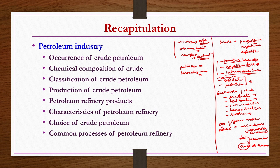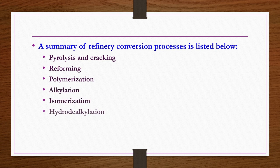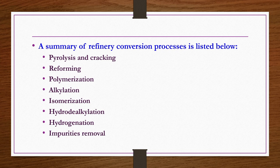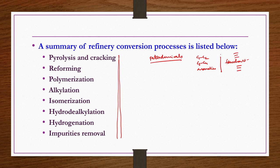Common refinery conversion processes include pyrolysis and cracking, reforming, polymerization, alkylation, isomerization, hydrodealkylation, hydrogenation, and impurities removal. We discuss these processes individually because in subsequent chapters — covering C1 to C2 chemicals, C3 to C4 chemicals, and aromatics — these processes appear in flowcharts. Understanding them now means we won't need to explain them repeatedly when discussing petrochemicals production.